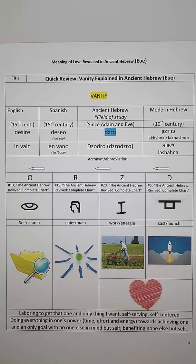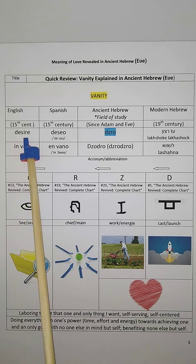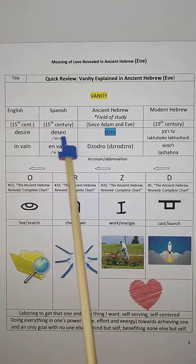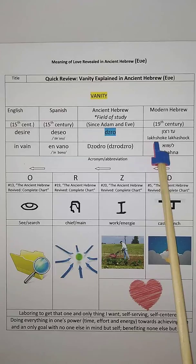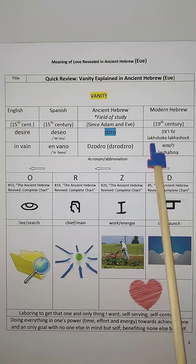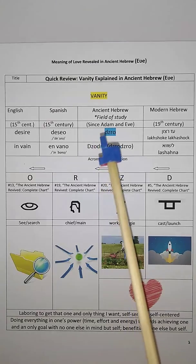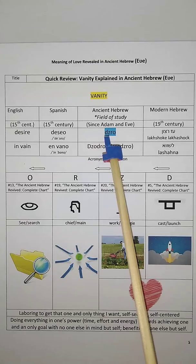In our previous presentation, we learned about the word vanity. In a quick review, how do you say desire in Spanish? It is 'desear.' And how do you say desire in modern Hebrew? It is 'lachashok.' And the word for desire in the ancient Hebrew, the Ebe, is 'Jro.'